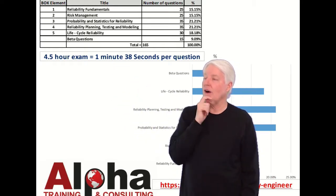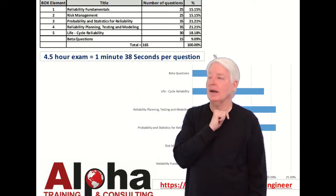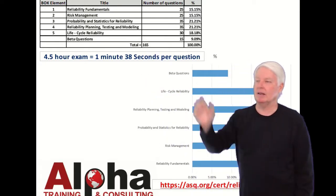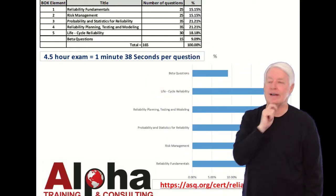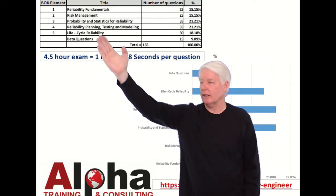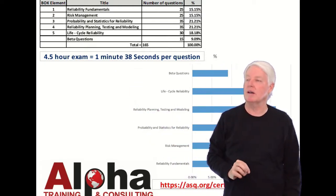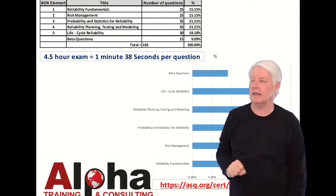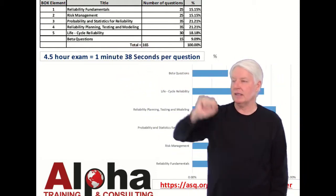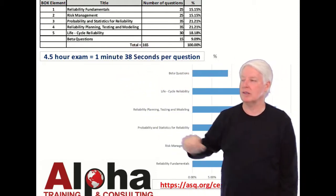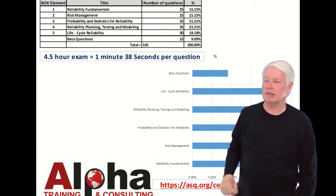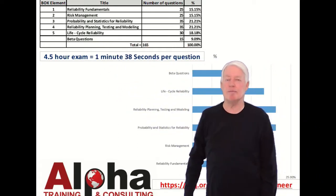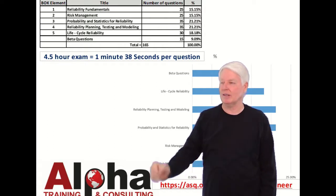They break it into just five basic categories of the body of knowledge. Reliability Fundamentals, they test you 25 questions on that. Risk Management, which is also 25. Probability and Statistics for Reliability, there's 35 questions. Reliability Planning, Testing and Modeling, 35 questions there. So those are the big hitters. Life Cycle Reliability, there's 30 questions. And they're going to throw in 15 beta questions for you also, giving you a total of 165 questions.